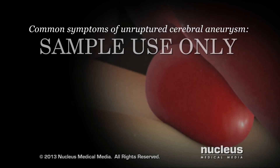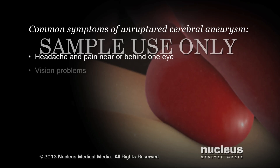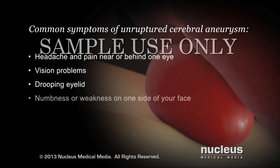An unruptured cerebral aneurysm may not cause symptoms, but large unruptured aneurysms may cause headache and pain near or behind one eye, double or blurred vision, a drooping eyelid, and numbness or weakness on one side of your face.